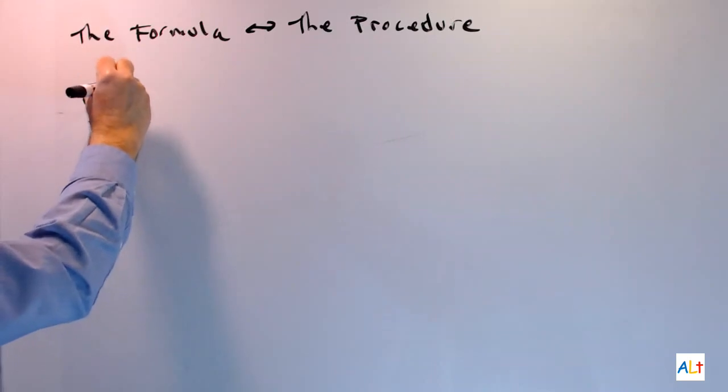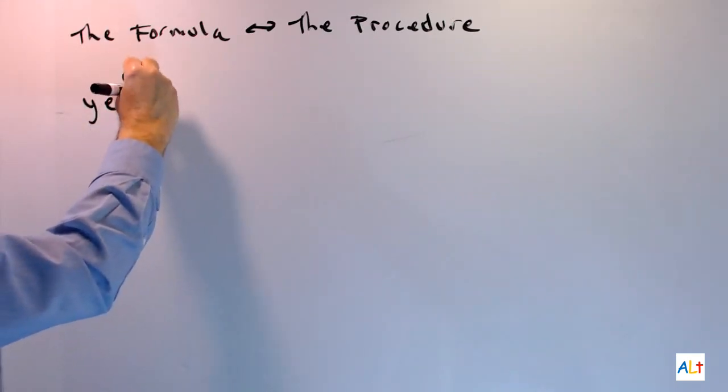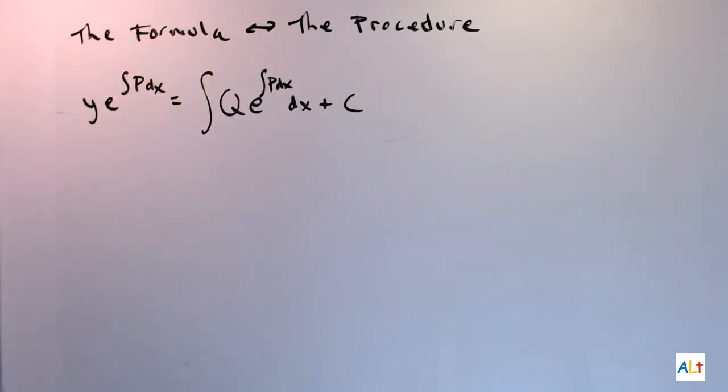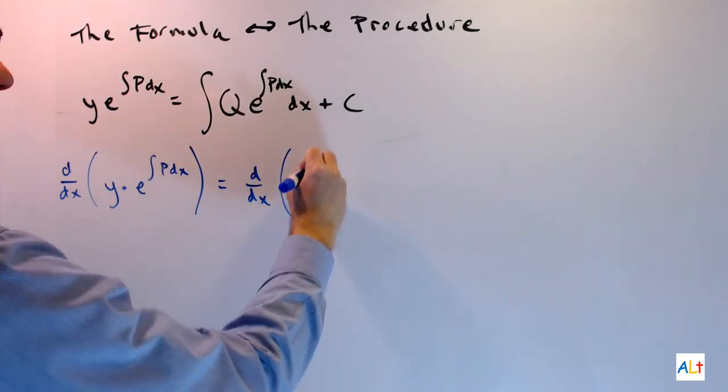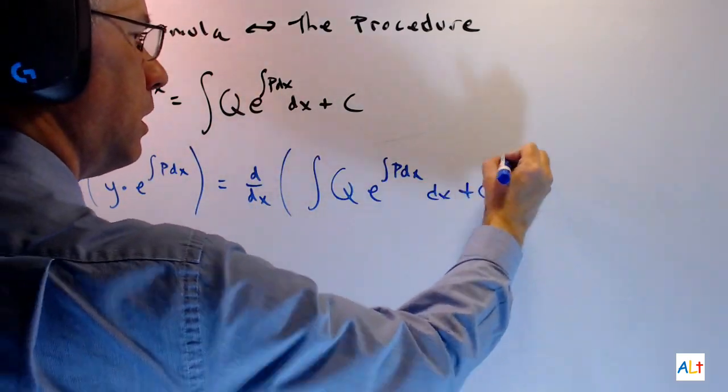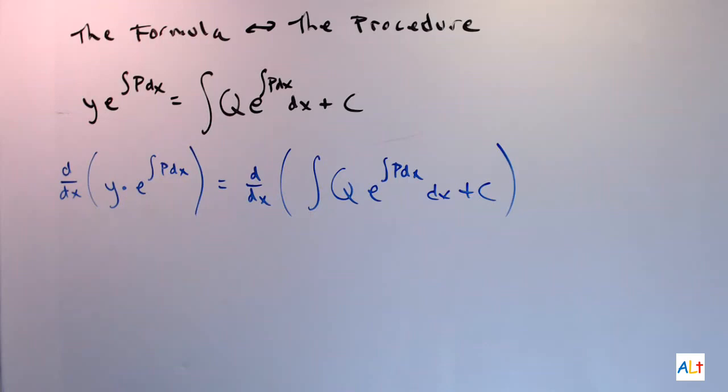So what about that procedure? Let's start with this version of the formula. So what do we do with this? Well, let's try taking the derivative of everything with respect to x. What do you get when you do that? Well, the right side is easy because the derivative just cancels out the integration. So you get this.